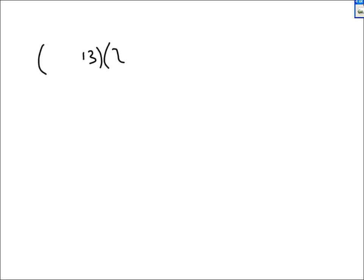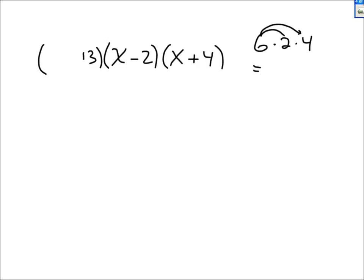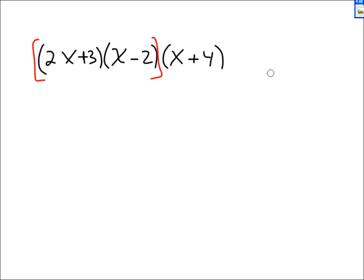How about multiplying 3 things? Think about it: if you had 6 times 2 times 4, you wouldn't distribute the 6 across both. You'd do 6 times 2 to get 12, then multiply 12 by 4. You can invoke the associative law — do the first two factors first, get an answer, then multiply that answer by the third factor, x plus 4.